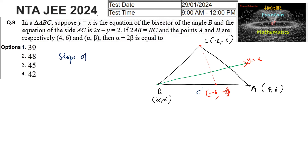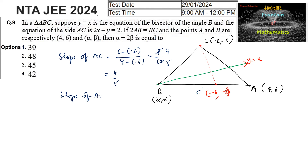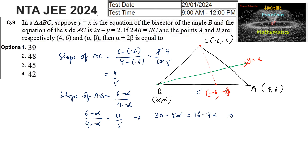The slope of AC = (6 - (-2))/(4 - (-6)) = 8/10 = 4/5. The slope of AB = (6 - α)/(4 - α), which must also equal 4/5. Setting (6 - α)/(4 - α) = 4/5 and simplifying: 30 - 5α = 16 - 4α, giving 14 = α.